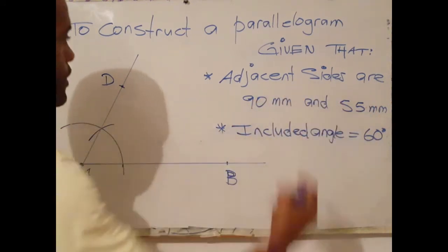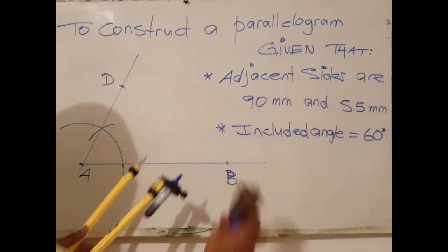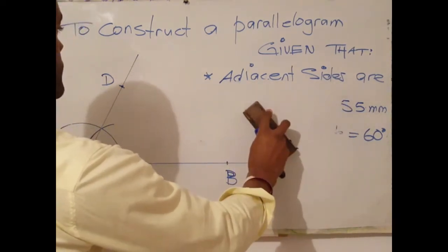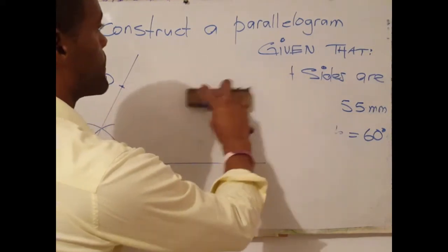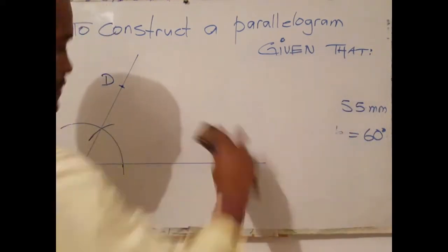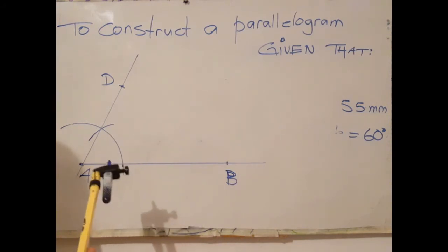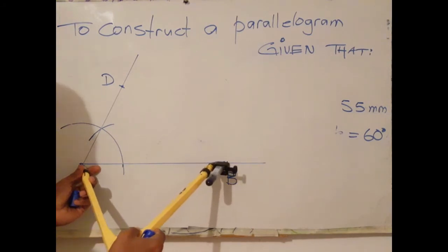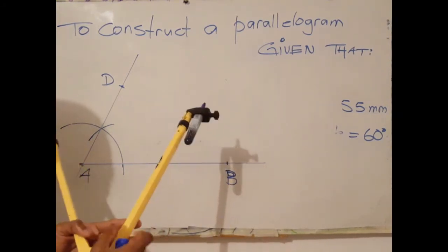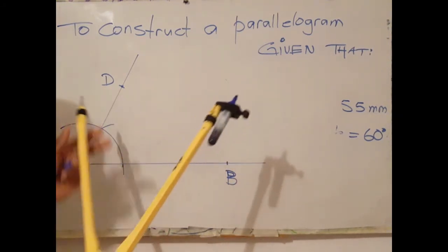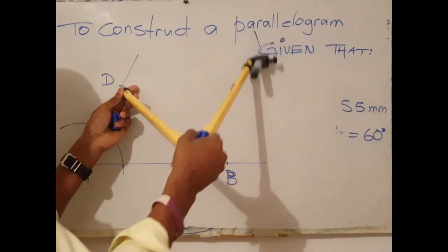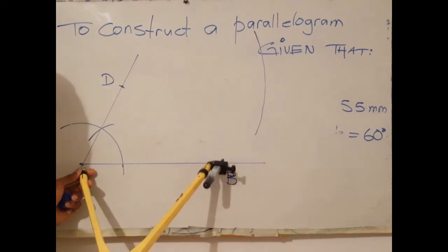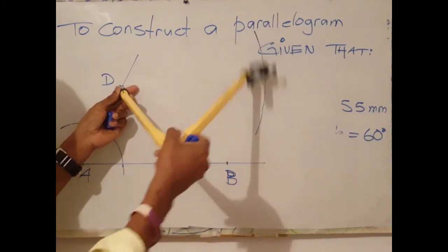Incidentally, the figure will fall here. I will be erasing this. The next step is to open our compass to the length of side AB, 90 millimeters. Using the same AB radius, describe an arc above.